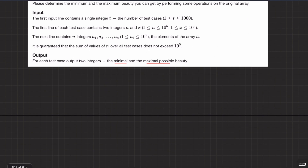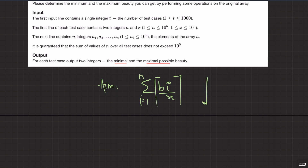My aim is to minimize or maximize the sum of ceil(bi / x). The question depends on whether by combining two adjacent elements with their sum, the ceil is increasing or not. Let's say I have three elements: 3, 5, and 9. If I combine 3 and 5 into 8, does the beauty increase or decrease? Let's say x is 4 — here the beauty is ceil(3/4) + ceil(5/4) + ceil(9/4).